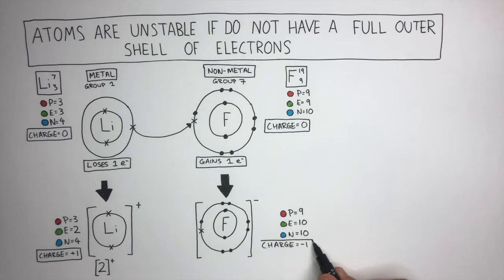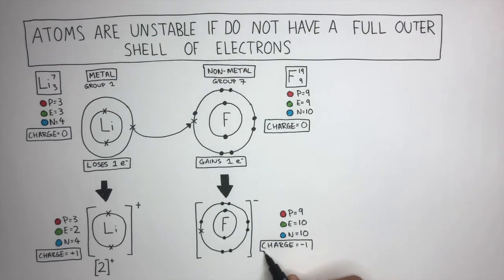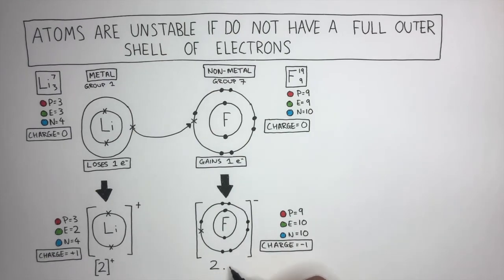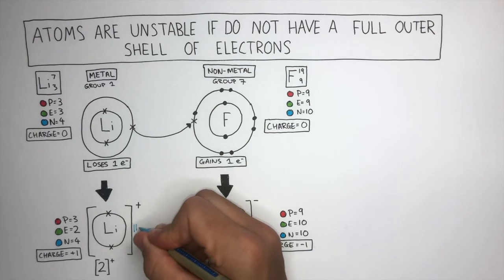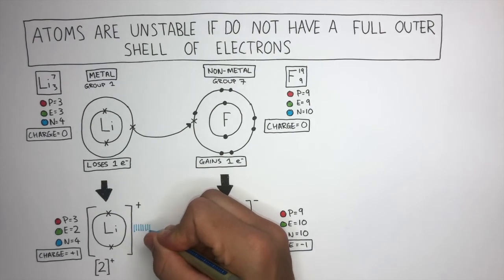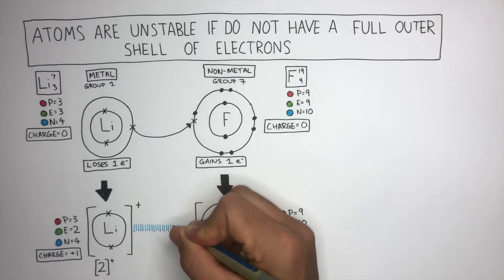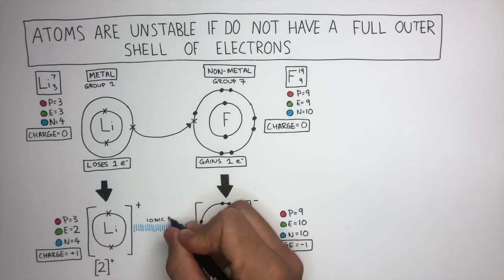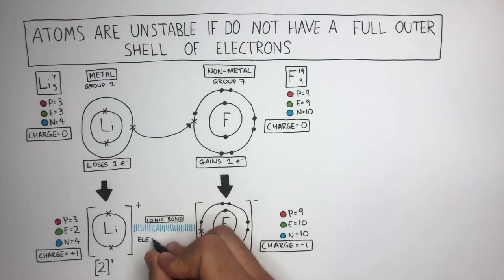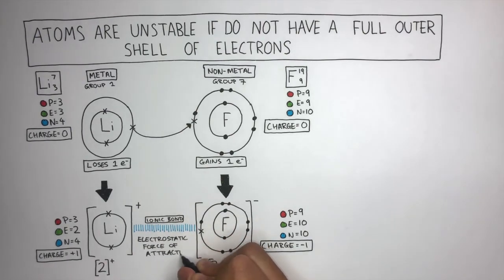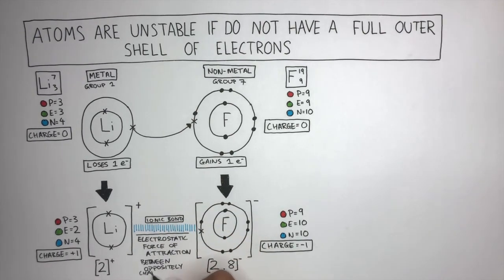Negative ions are known as anions. The electronic configuration is 2.8 in square brackets because it's an ion, and then you write the minus charge in the top right. These blue lines represent the electrostatic force of attraction between oppositely charged ions — this is known as an ionic bond. An ionic bond is the electrostatic force of attraction between oppositely charged ions. Ionic bonds are very strong and always form between oppositely charged ions.